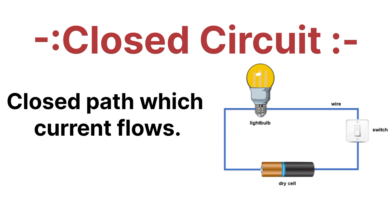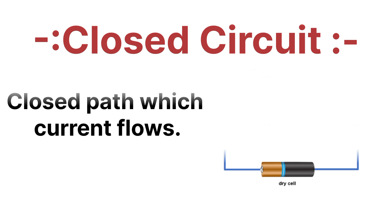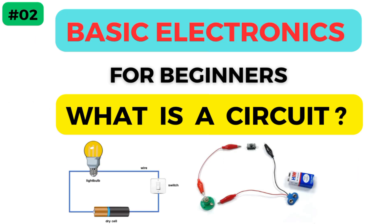A closed circuit is a closed path through which current can flow. An open circuit breaks the current, while a closed circuit joins the current — meaning the flow of current is available through the closed path. That is why we call it a closed circuit. These are the main differences between open circuit and closed circuit, along with the definition of a circuit.